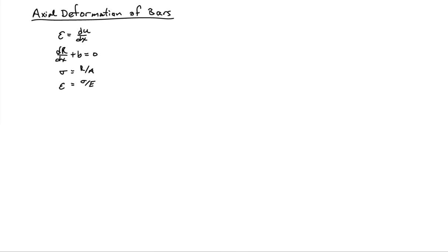We have four basic equations. We have our kinematic equation, which was that the strain is equal to du dx. We have our equilibrium equation, which says dr dx plus any distributed body forces must be equal to zero. We have the stress-resultant relationship, which, for example, says the stress is equal to the internal resultant divided by the area.